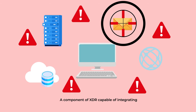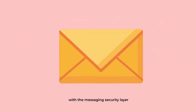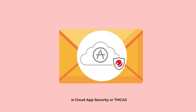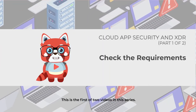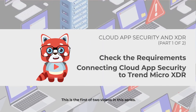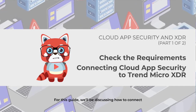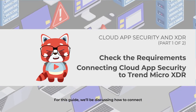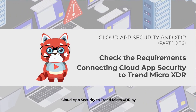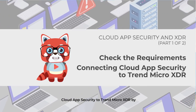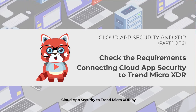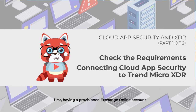A component of XDR capable of integrating with the messaging security layer is Cloud App Security, or TMCAS. This is the first of two videos in this series. For this guide, we'll be discussing how to connect Cloud App Security to Trend Micro XDR.